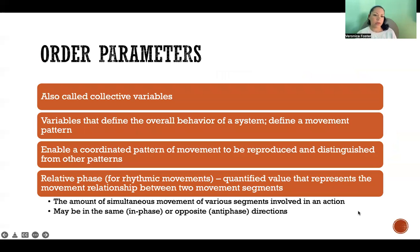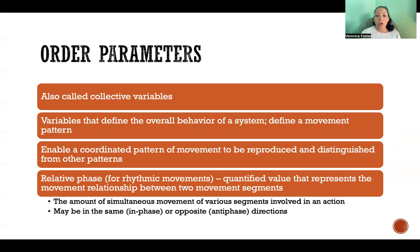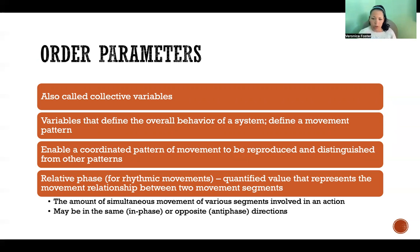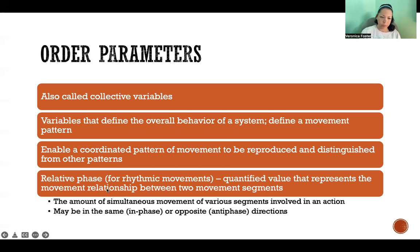Order parameters, also referred to as collective variables, are variables that define the overall behavior of a system and define a movement pattern. They enable a coordinated pattern of movement to be reproduced and distinguished from other patterns. A good example in movement control is relative phase, which applies to rhythmic movements like gait patterns. It's a quantified value that represents the movement relationship between two moving segments. Relative phase can be in-phase — movement in the same direction — or antiphase — movement in the opposite direction — but in either case they're coordinated patterns.